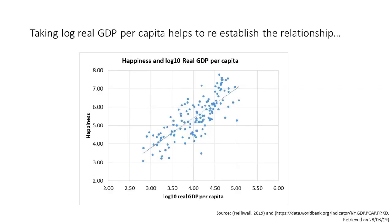This next section is for extension purposes only and requires an understanding of logs. What I've done here is converted the x-axis into the log of real GDP per capita rather than just the level of real GDP per capita. We can now see that we've re-established the relationship between happiness and real GDP per capita — we now have a linear relationship. So even for richer countries, the happiness score continues to rise as the log of real GDP per capita rises.